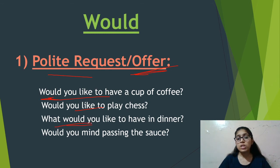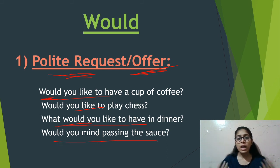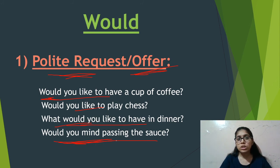Here you are making an offer — 'Would you like to have a cup of coffee?' means: do you want to have coffee? 'Would you like to play chess?' — do you want to play chess? So you are offering something, and also getting to know someone's wish. For a polite request, you also use would — for example: 'Would you mind passing the sauce?' — you are politely requesting someone to pass the sauce.